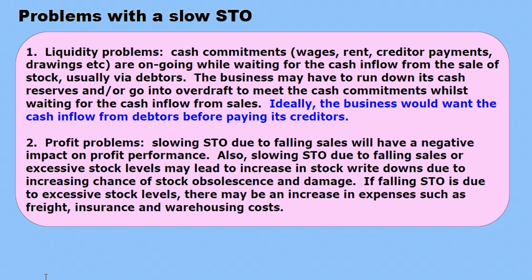We're looking at the problems associated with a slow stock turnover — that is, it's taking a relatively long time for the stock to be converted into sales. The second problem is profit problems: a decrease in profit caused by slow stock turnover.